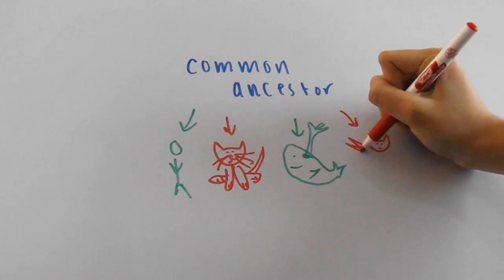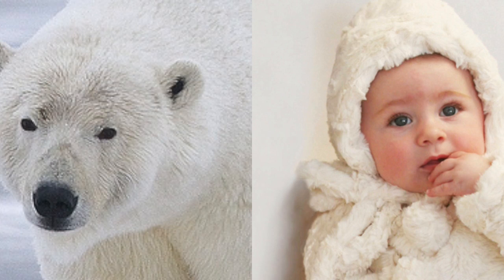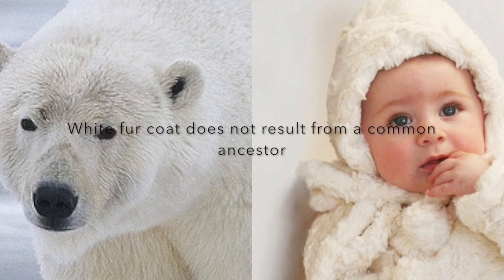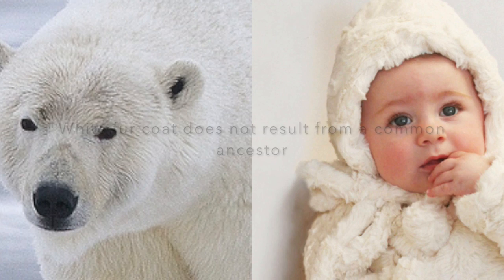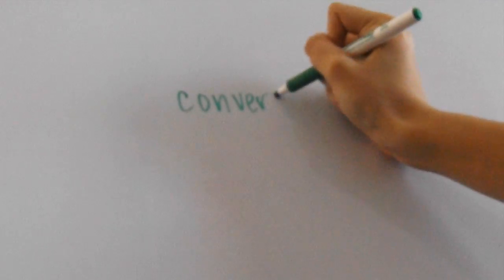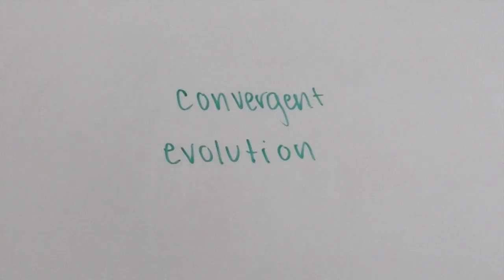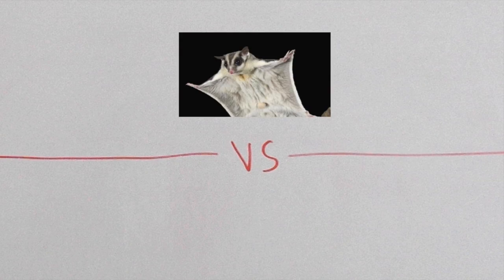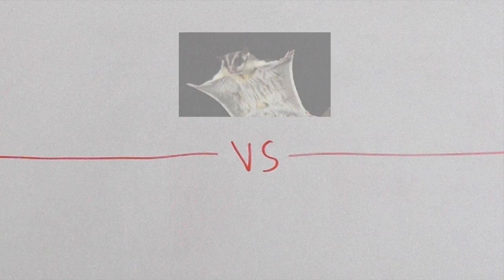In contrast, analogous structures are the ones that are extremely similar to each other, but they're not due to a recent common ancestor. Analogous structures result from what we call convergent evolution, which is when two or more organisms are in similar environments and develop similar body structures due to these environments.